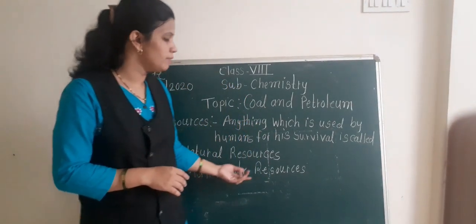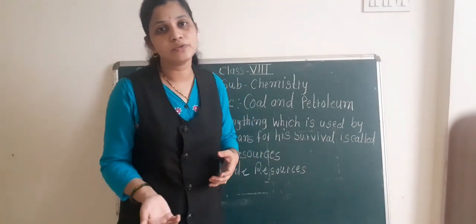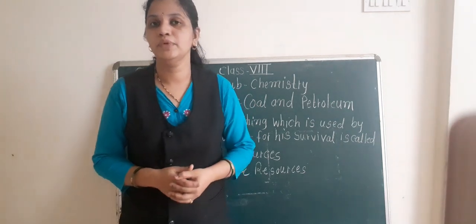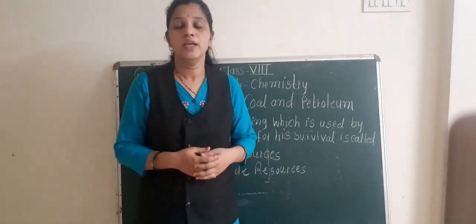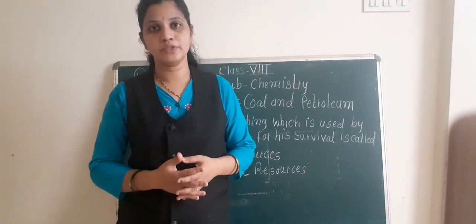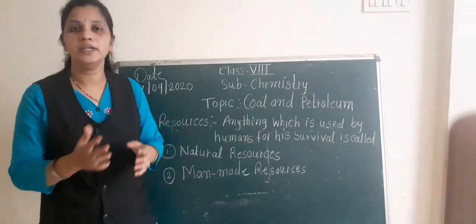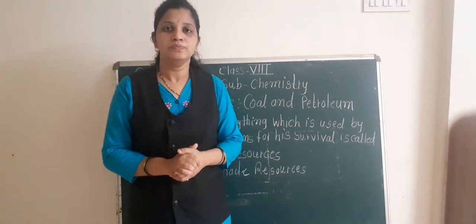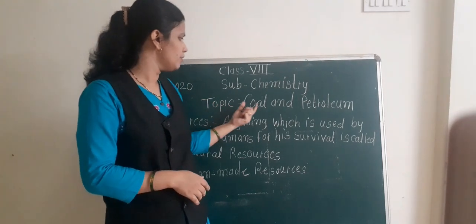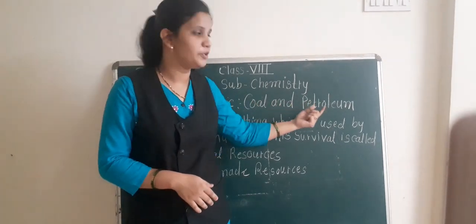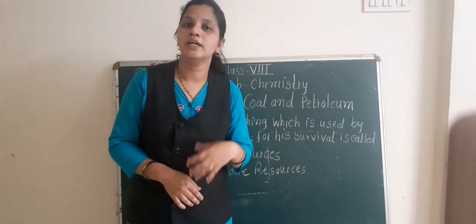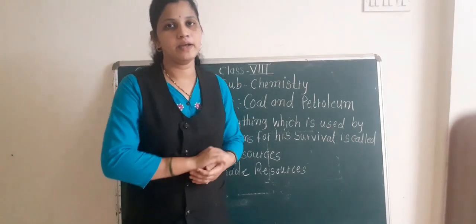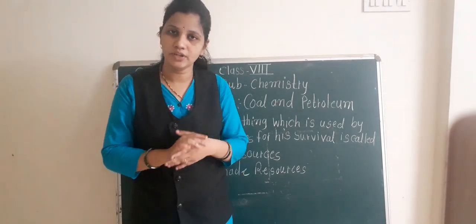The second one is manmade resources. Manmade resources means artificial. For example, fridge, TV — these are artificial resources, or you can say manmade resources, because they are made by humans. So what is the name of our lesson? That is coal and petroleum. These both are natural resources. So today we are going to discuss in detail about natural resources.